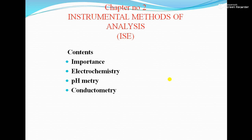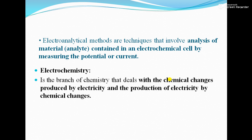So what is electrochemistry? Electrochemistry is the branch of chemistry which deals with the interconversion of electrical energy to chemical energy and vice versa. It is the branch of chemistry that deals with the chemical changes produced by electricity and the production of electricity by chemical changes. The word itself indicates electrical and chemical — that is electrochemistry.